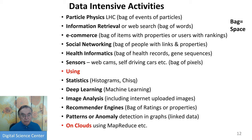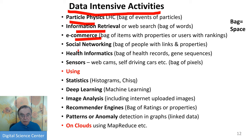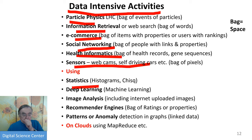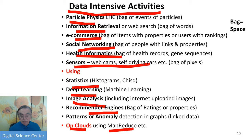Here is a list of data-intensive applications: particle physics, information retrieval and web search, e-commerce, social networking, health informatics, gathering data from webcams, using statistics or deep machine learning, image analysis, recommender engines, and anomaly detection. These run on clouds using MapReduce, TensorFlow, PyTorch and similar tools. In science we tend to use words like 'feature space'; in information retrieval we use 'bags of documents,' but the concept is similar.